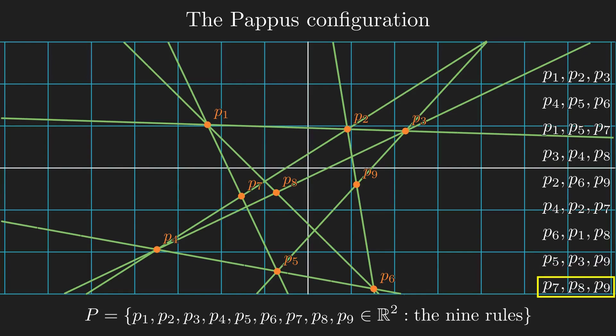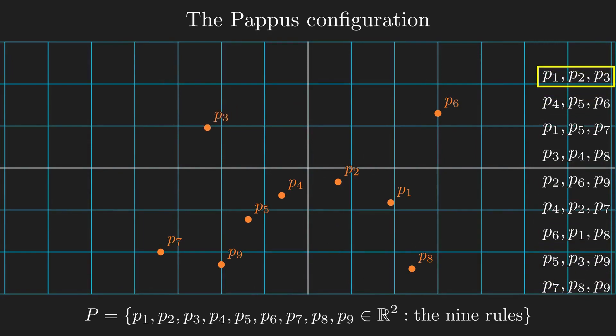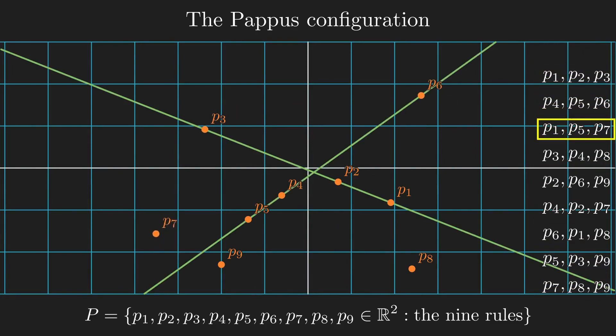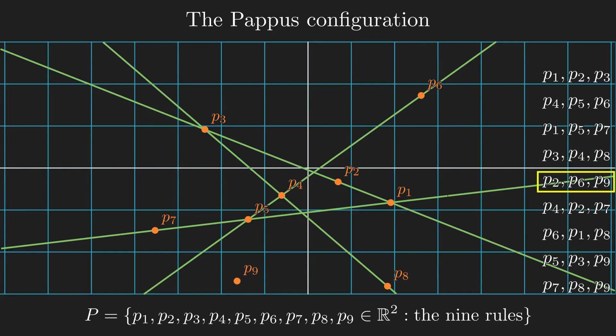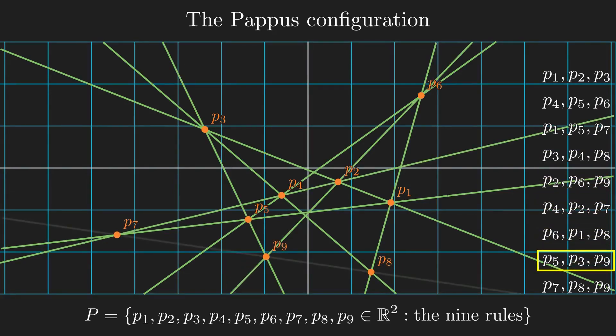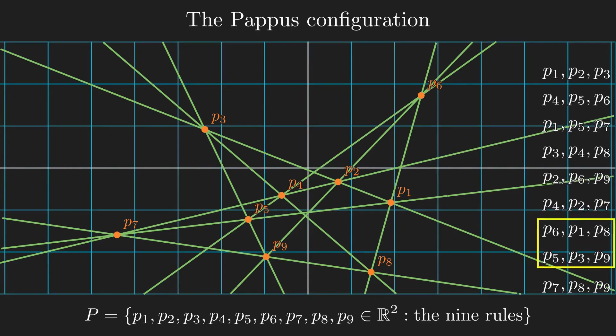The final rule is for points seven, eight, and nine. I'll move point, wait. These points are already collinear. Well, maybe it's just a coincidence. I'll scatter the points and try again. Points seven, eight, and nine are still collinear. It's as if I don't even need the final collinearity rule, since the first eight already imply it.